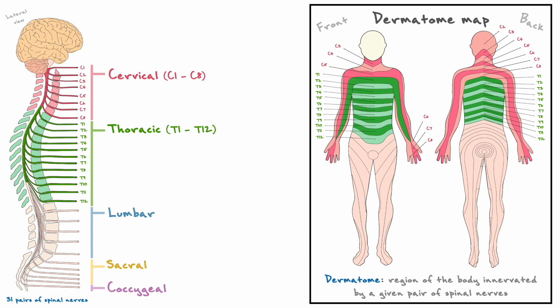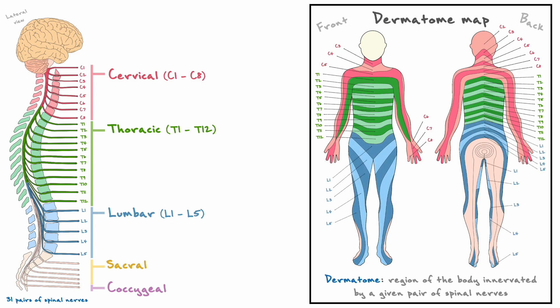Next, the lumbar section of the vertebral column covers the lower back and has 5 of the 31 spinal nerve pairs. The dermatome regions, which are labeled L1 to L5, cover mostly the legs and the lower back. Then, the sacral region has 5 of the 31 pairs and covers mostly the legs, with dermatomes and spinal nerve pairs labeled S1 to S5. Finally, the coccygeal region is associated with one single pair and covers the region of the coccyx.